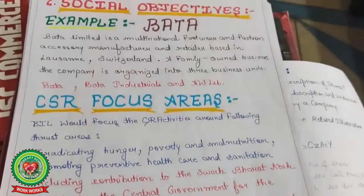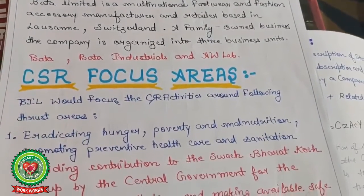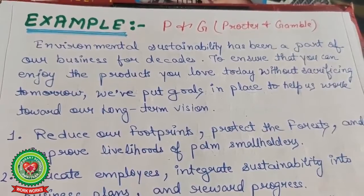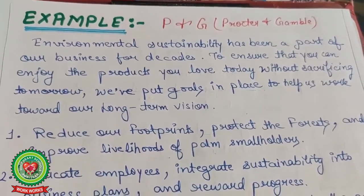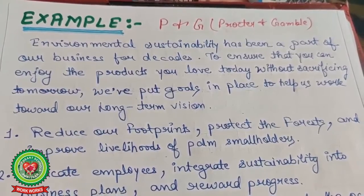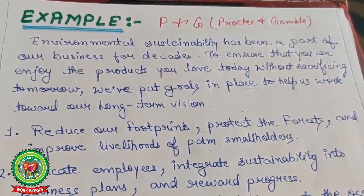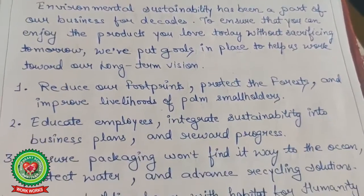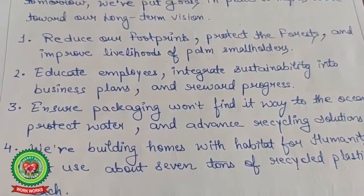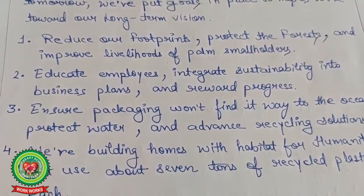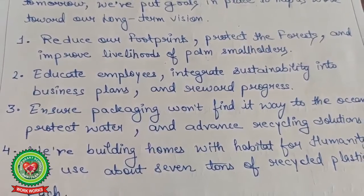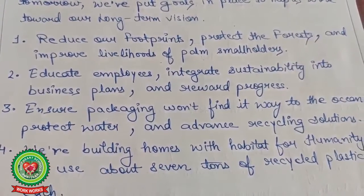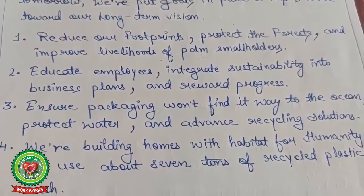These are the responsibilities shown by Bata towards society. Now one more example — P&G, Procter and Gamble. Environmental sustainability has been a part of their business for decades, to ensure you can enjoy the products you love today without sacrificing tomorrow. CSR responsibilities of this company: number one, reduce their footprint, protect the forest, and improve the livelihood of palm small holders — meaning farmers.